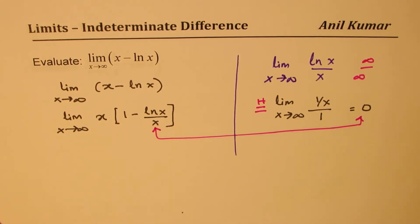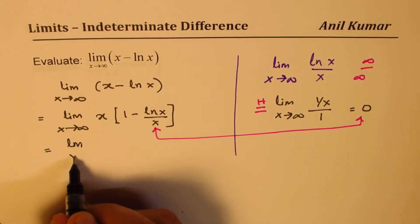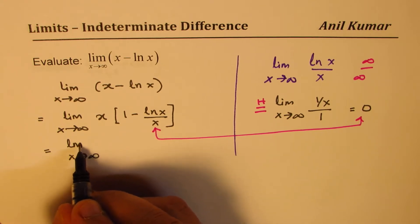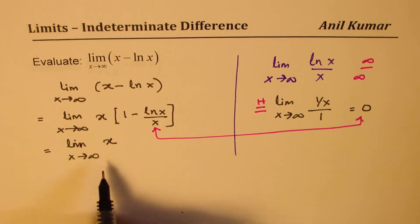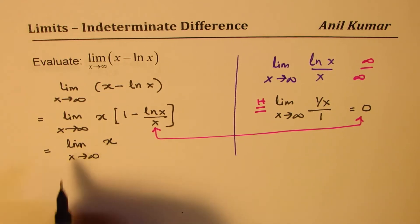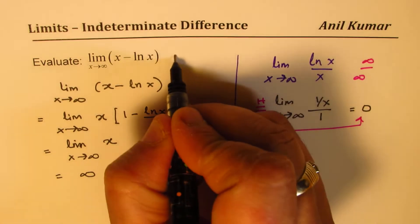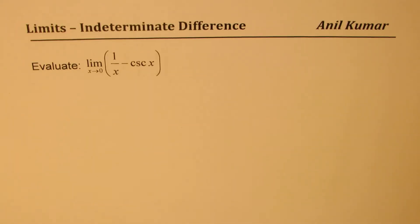So we notice that the limit as x approaches infinity of x times (1 minus 0) is just x approaching infinity, which gives infinity as the result. So the answer is infinity. Now let's take the second example, which involves a trigonometric function.